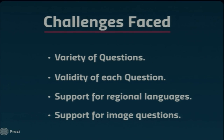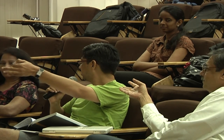Challenges included the variety of five question types, requiring different API functions for each. The API was also vulnerable to invalid inputs, so validity checks were added. To serve the nation, support for regional languages in questions was provided. Images are not bound by language barriers, so support for images was added — users can upload images and the system stores the URL. If a question or answer contains an image, this can be validated through the contribution portal.